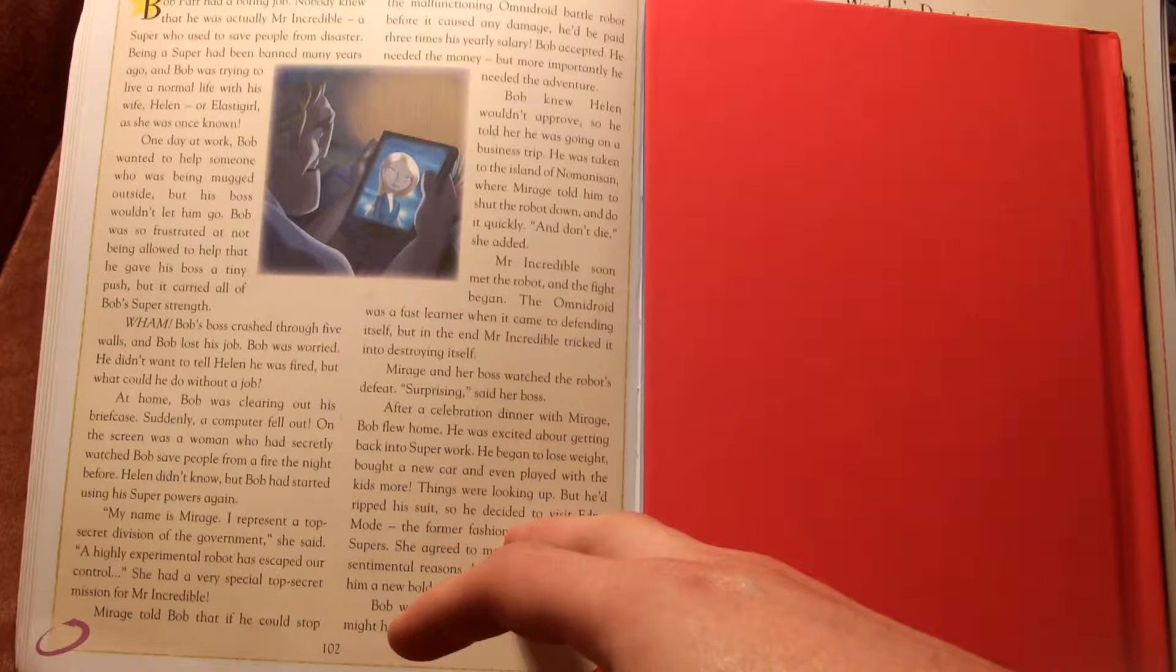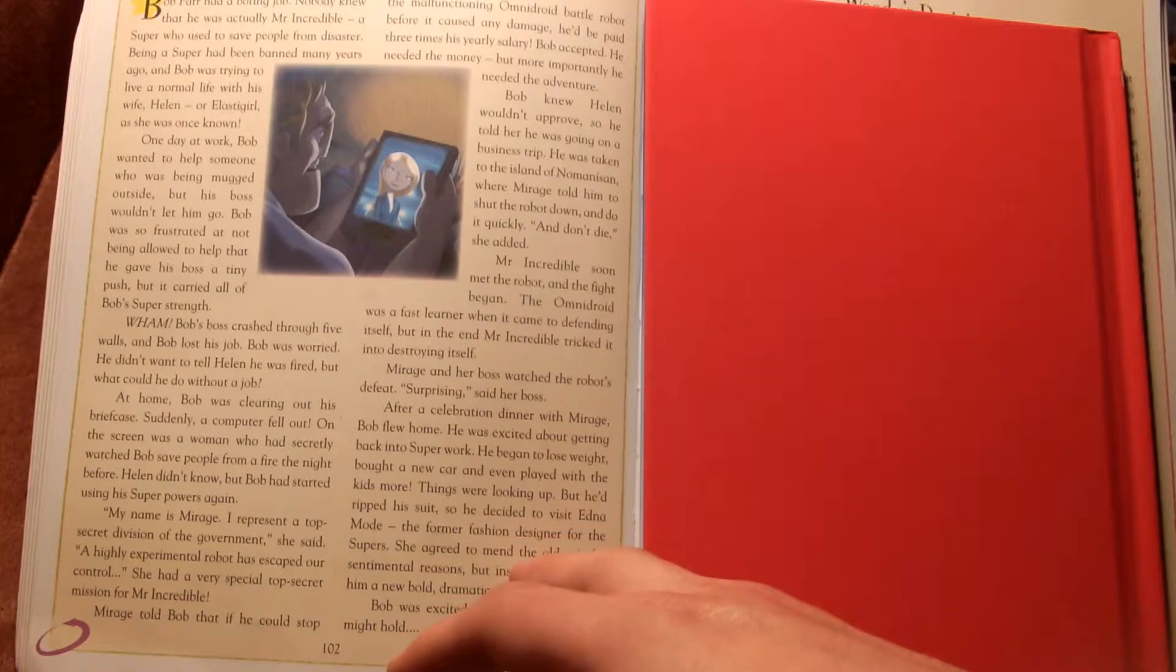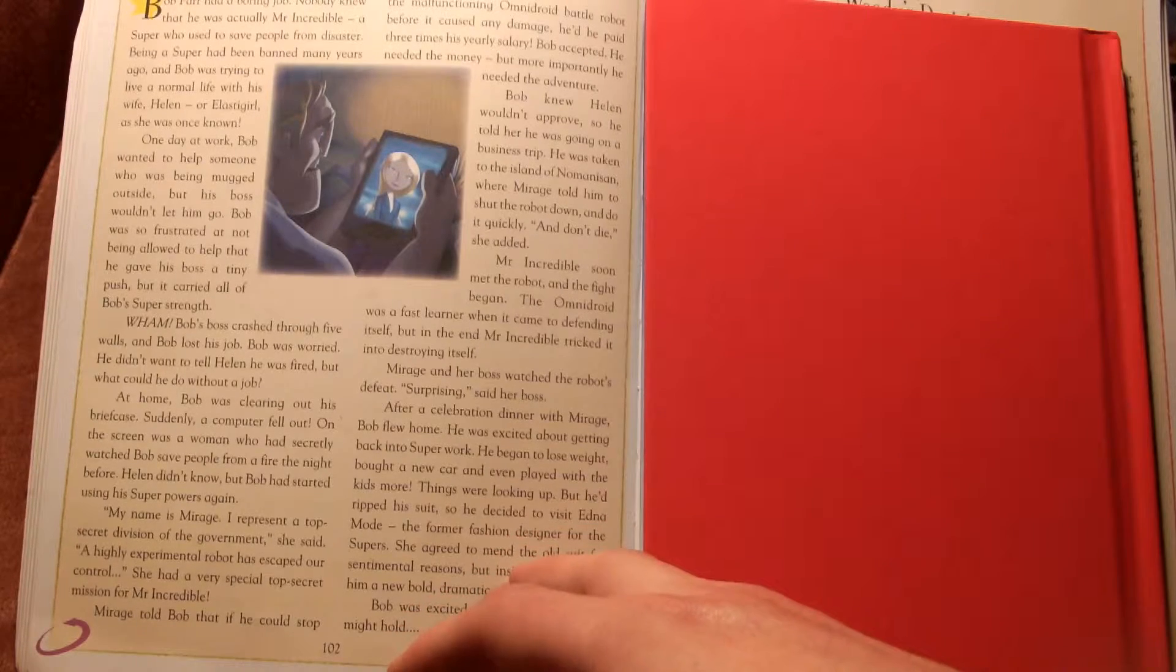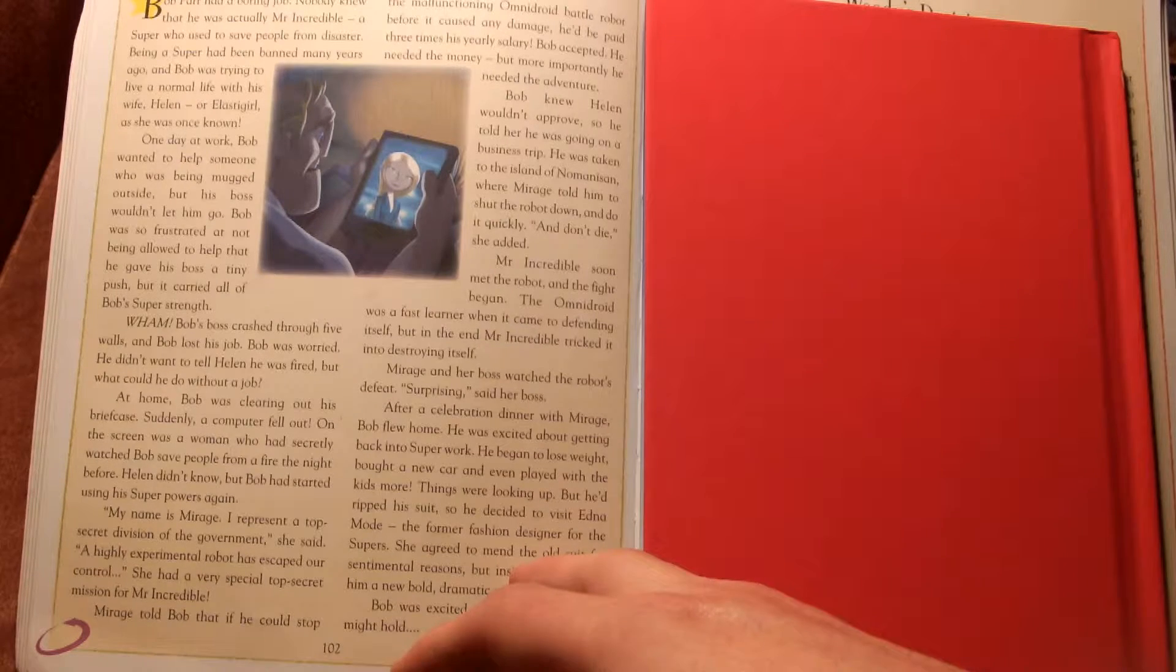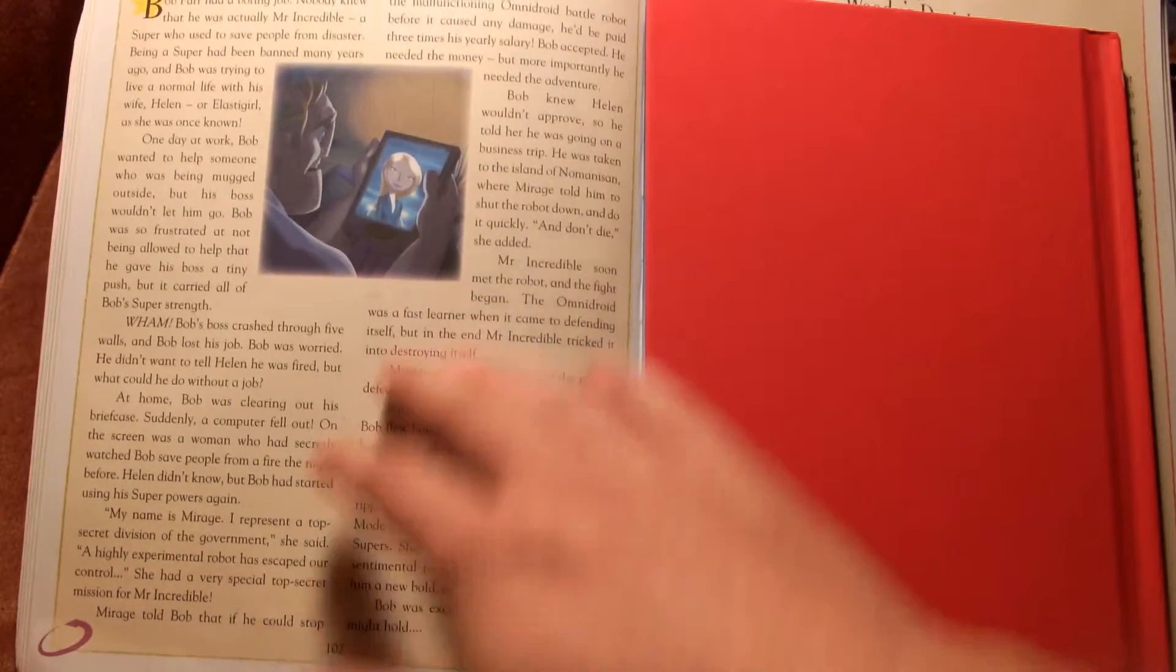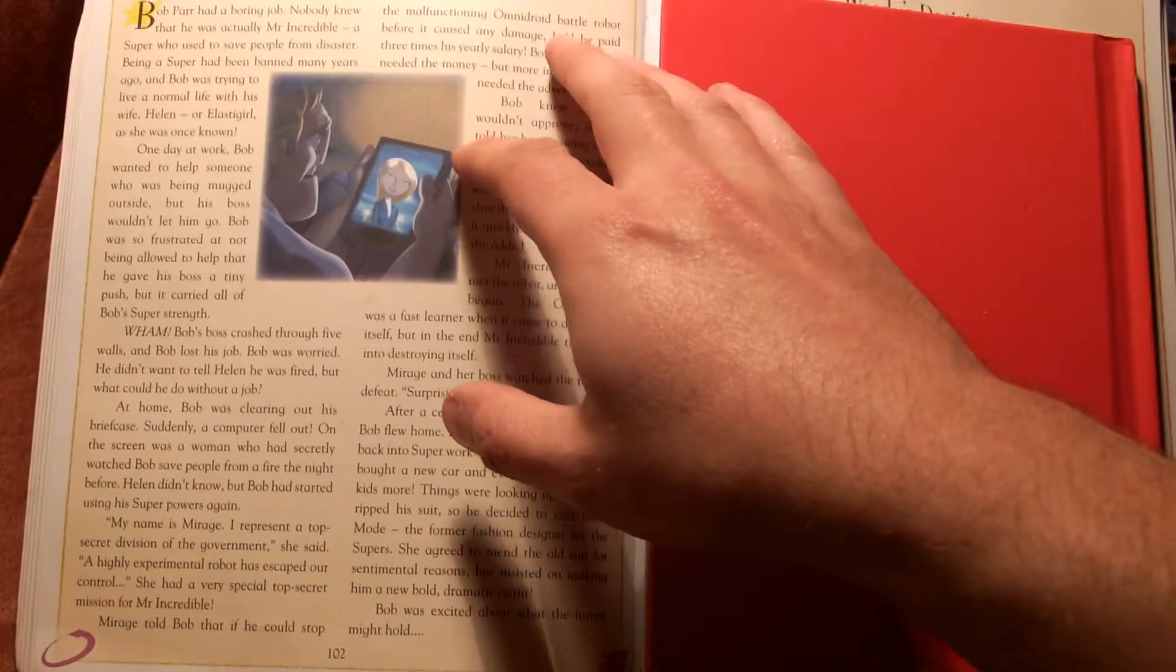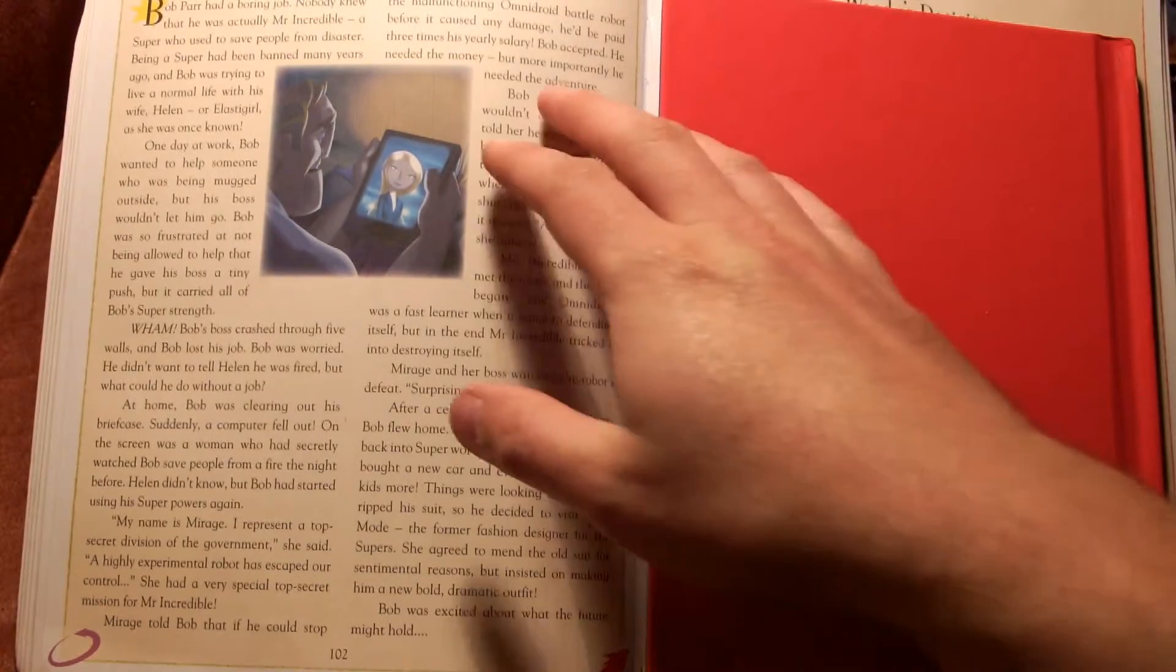My name is Mirage. I represent a top secret division of the government, she said. A highly experimental robot has escaped our control. She had a very special top secret mission for Mr. Incredible. Mirage told Bob that if he could stop the malfunctioning Omnidroid battle robot before it caused any damage he'd be paid three times his yearly salary.